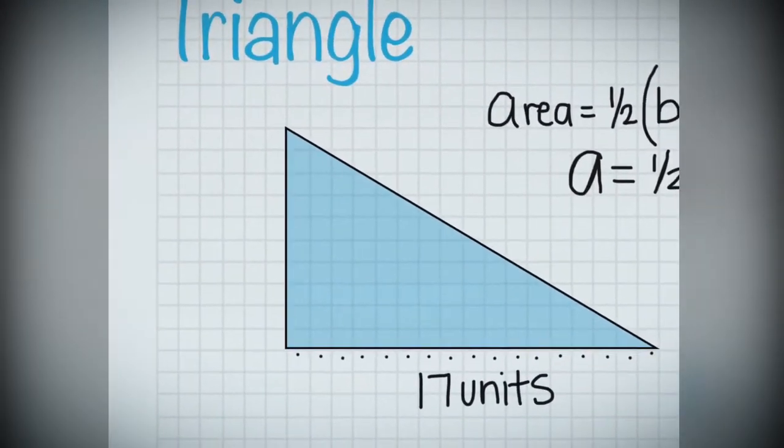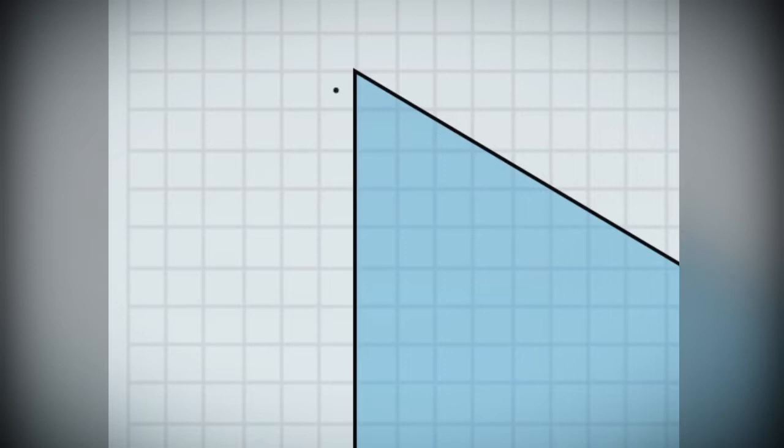Keeping in mind, we don't want to use the slanted or diagonal measurement. We want to make sure the line is straight up and down. Think about where the right angle in the triangle is located. Running perpendicular with the base, that is your height. Here it is 10 units.